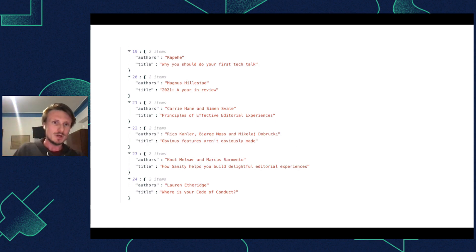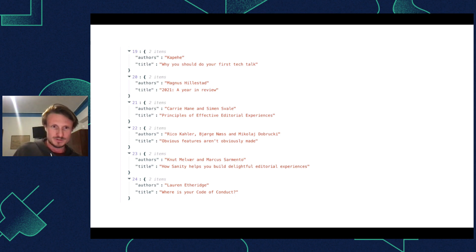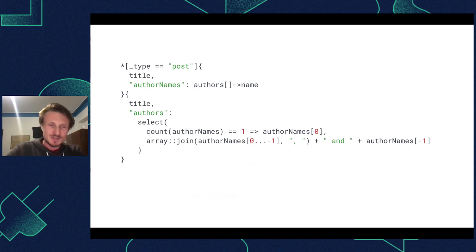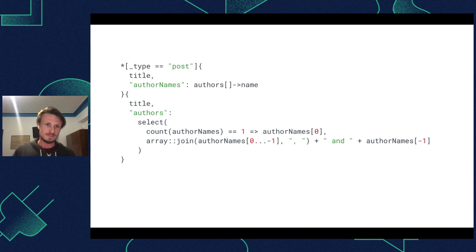By writing all this code, you can run it against your blog and it will nicely show single authors properly, two authors with an 'and', and three or more authors with a comma plus 'and'. Once again you could question whether you should be doing this in your queries or on the front end, but it's pretty cool to show that it's possible and that you can solve these needs — because sometimes it can really simplify what you're doing on the front end.